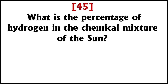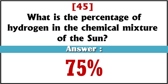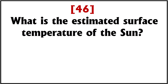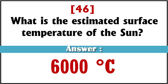What is the percentage of hydrogen in the chemical mixture of the sun? 75%. What is the estimated surface temperature of the sun? 6,000 degrees Celsius.